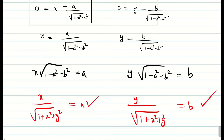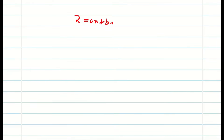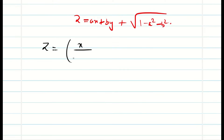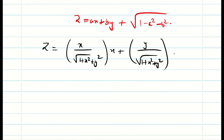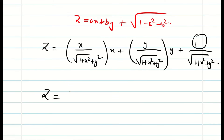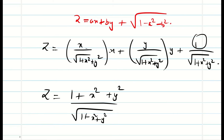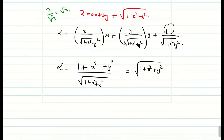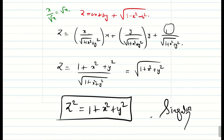Now we know a, b, and square root of 1 minus a square minus b square. So everything is ready. The singular solution is z equal to ax plus by plus square root of 1 minus a square minus b square. Substituting the values of a and b, we get z equal to x square plus y square plus 1 all divided by the square root of 1 plus x square plus y square. Squaring both sides gives z square equal to 1 plus x square plus y square.